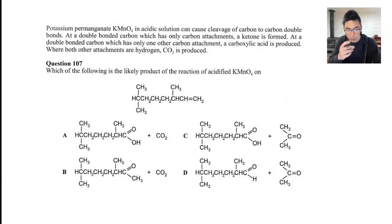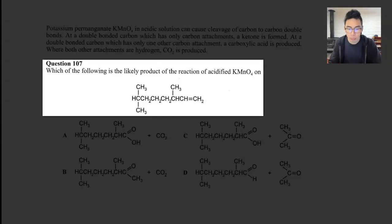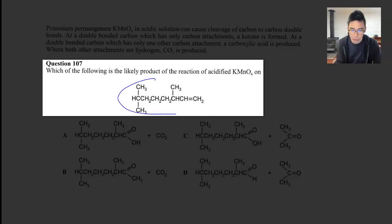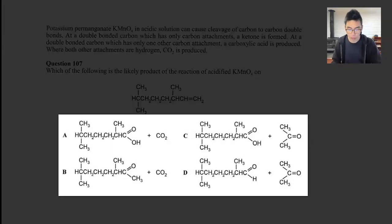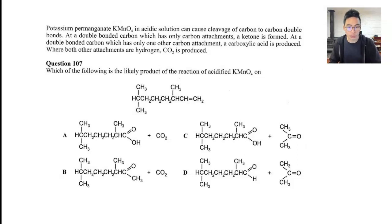Let's jump straight to the question. Which of the following is the likely product of the reaction of acidified potassium permanganate on this particular molecule? Looking at the answer options A, B, C, and D, we can see that we will have two products. Our job is to figure out what those two products are going to be. We'll likely need to follow a set of rules provided in the text, so let's go up and figure out how to predict what the product will be.